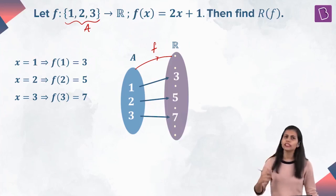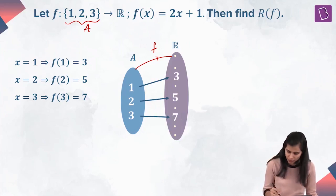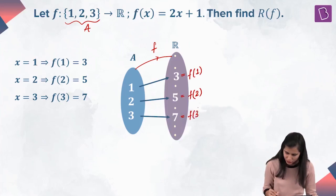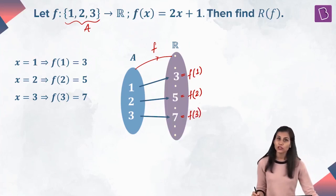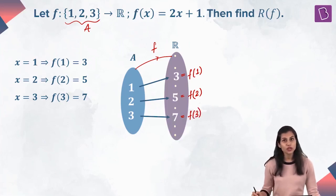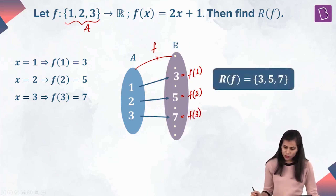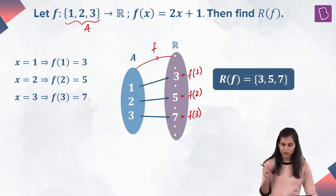Out of all the infinitely many real numbers in the co-domain, 3 is the image of 1 under f, 5 is the image of 2 under f, and 7 is the image of 3 under f. The set of all images is called the range. So the range of f is the set consisting of 3, 5, and 7.